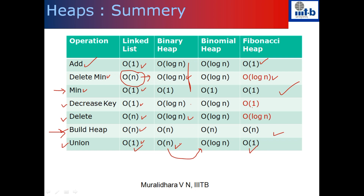The complexity of delete min, decrease key, and delete are amortized costs — these are not the actual costs. If in one case you call delete min, it could be as bad as O(n). But if you do a sequence of operations and end up doing k delete-min operations, it's going to be k·log(n), not k·n. That is the meaning of saying that the amortized cost of delete min is O(log n). So with this understanding, let's define what a Fibonacci heap is.